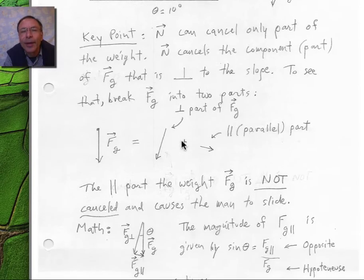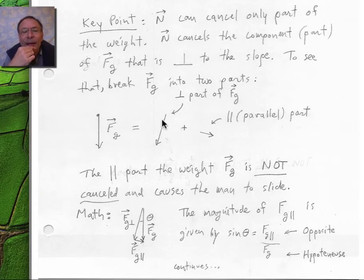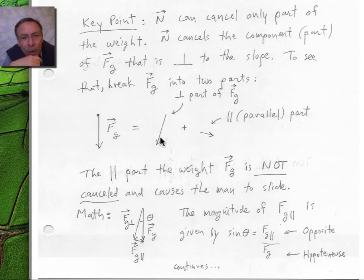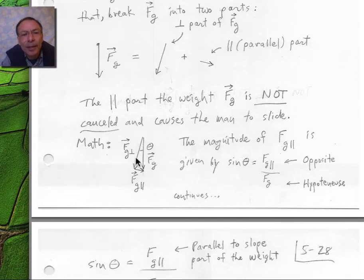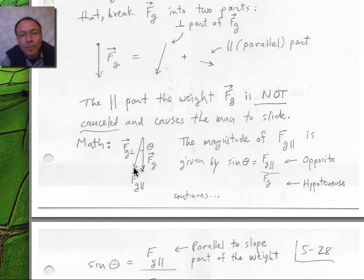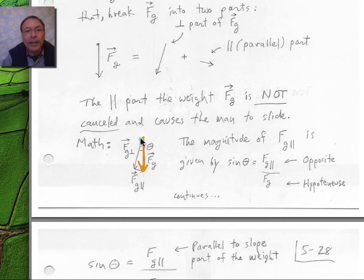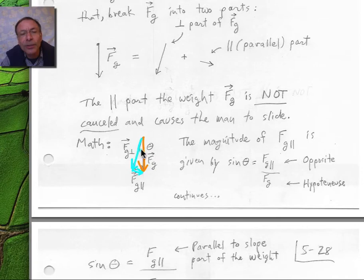To work these problems, you need to decompose the gravity vector — the weight vector — into a component perpendicular to the slope and a component parallel to the slope. His weight, the downward vector, is decomposed into a perpendicular part and a parallel part. If you added these two blue vectors, you'd get the original weight vector. The upside-down T symbol means perpendicular; parallel lines symbol means parallel. So F sub G perpendicular is the perpendicular part of the weight, and F sub G parallel is the parallel part.